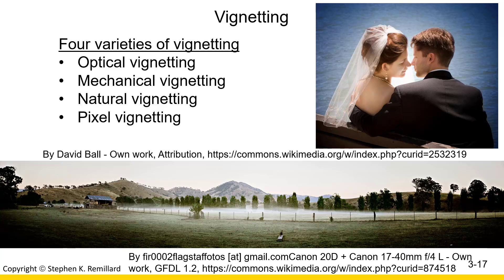Vignetting is the limiting of light, usually near the edges of a picture, although you can also have vignetting from an obscuration in the middle of an image, which is the case with Casagrande-type telescopes. There are four different varieties of vignetting: optical vignetting, mechanical vignetting, natural vignetting, and pixel vignetting, and I'm going to go over every one of them.